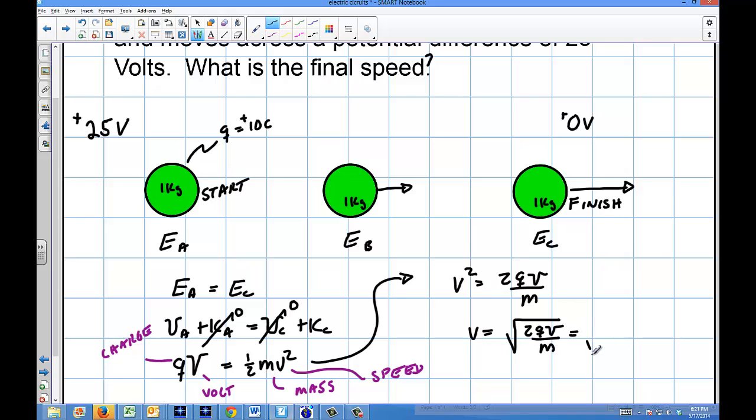Okay, so I plug those numbers in, and I will get, v is going to be 2 times 10 is the charge, times 25 is the voltage, and divided by the mass, which is 1.